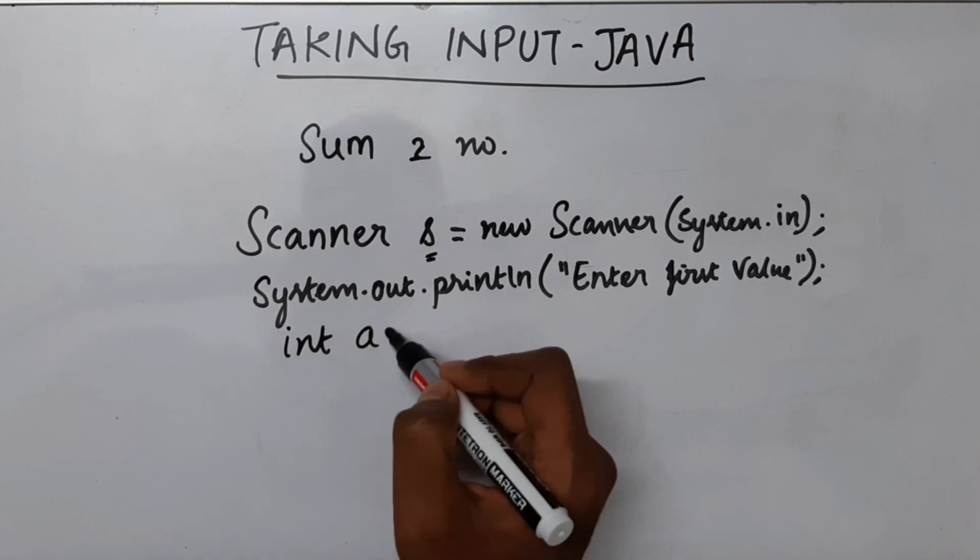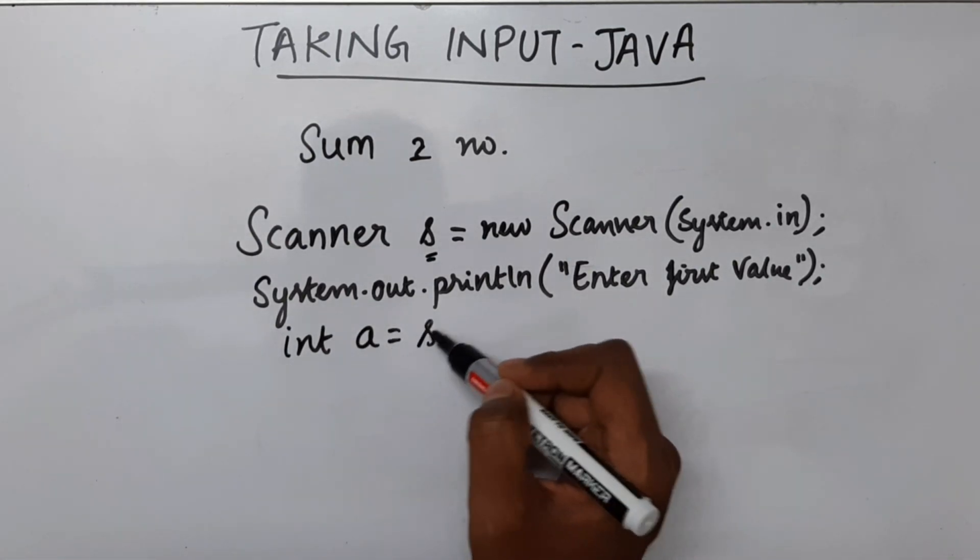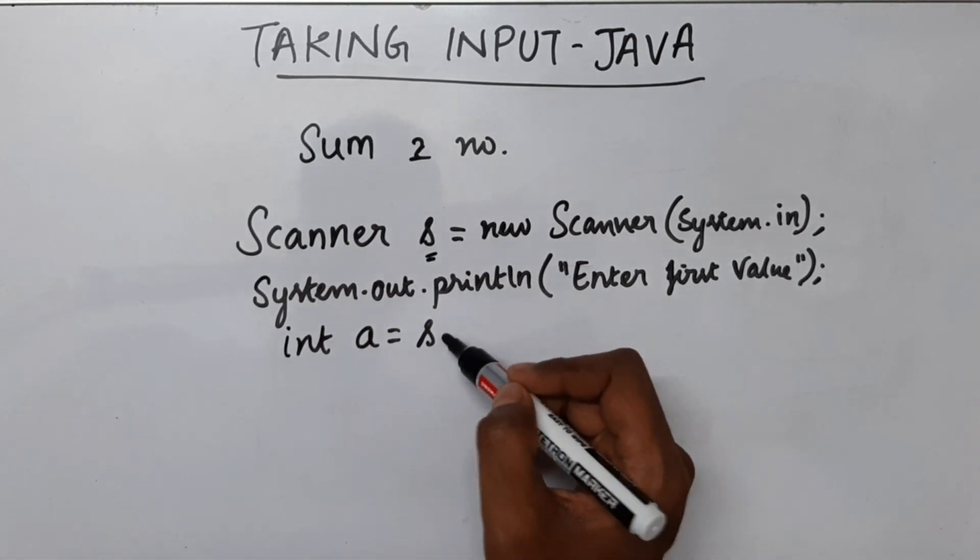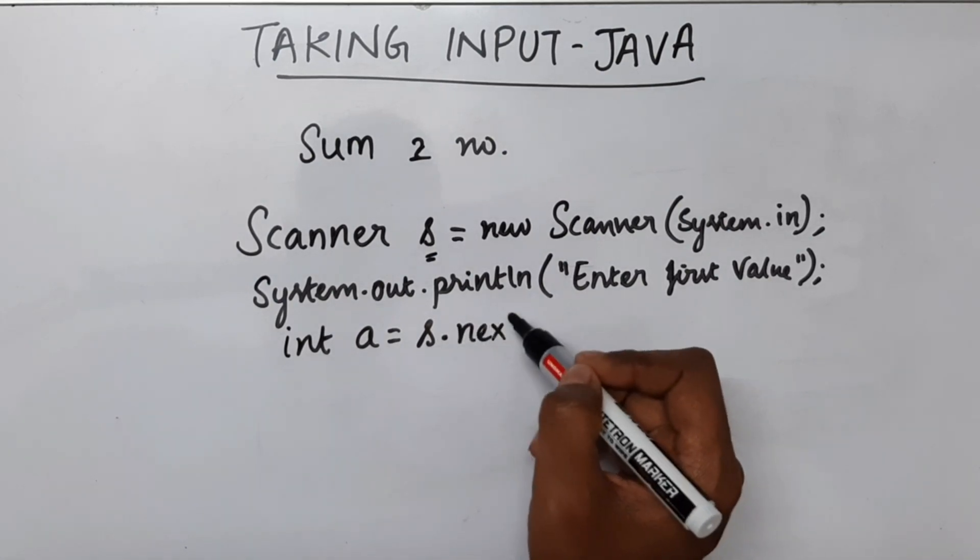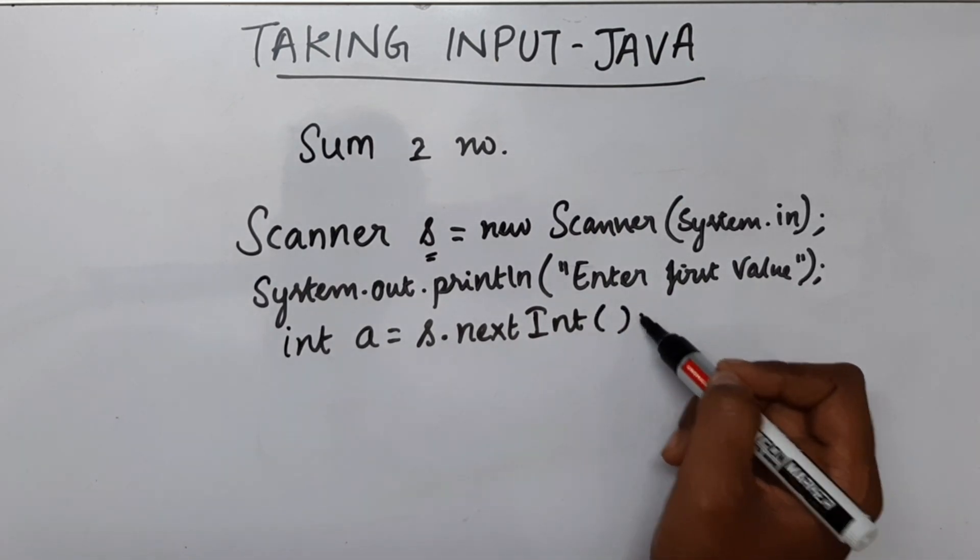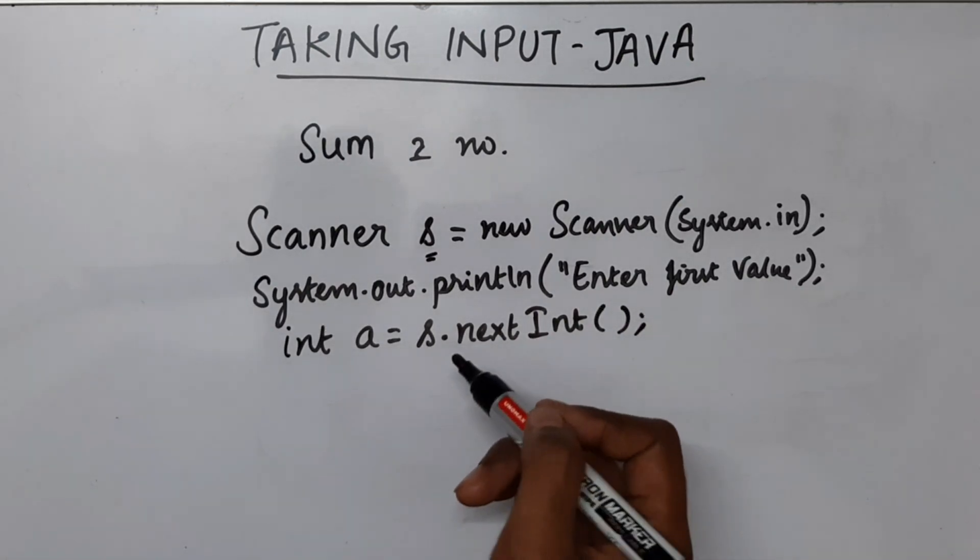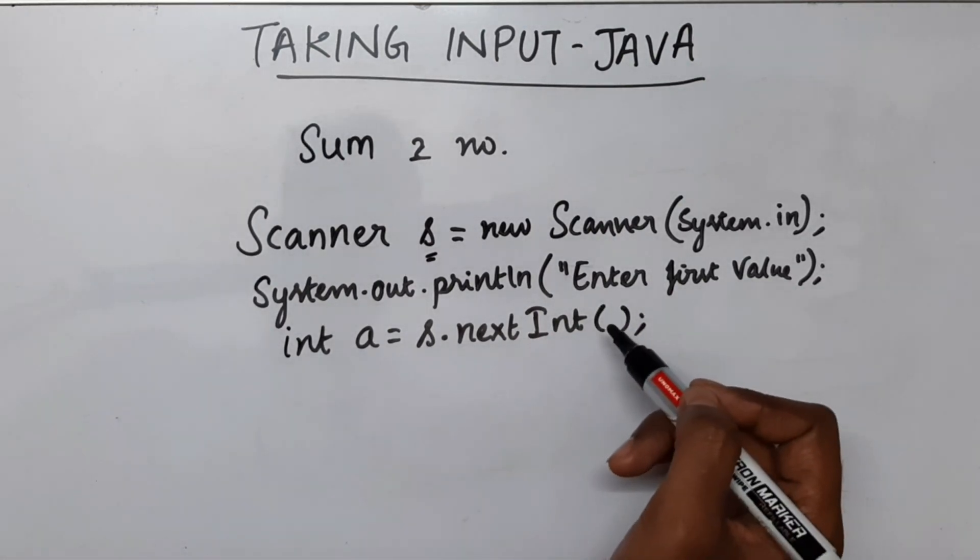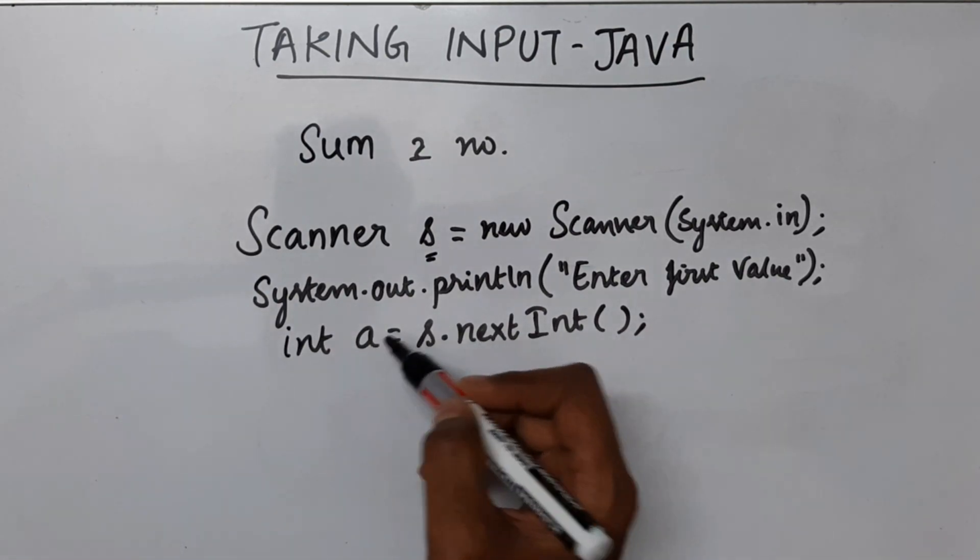So I will say int a equal to s, this is the scanner object, dot nextInt, capital I, nextInt open and close. So now this line will get the input from the user and store it in a.